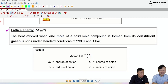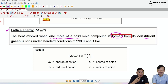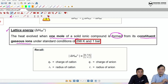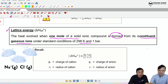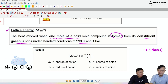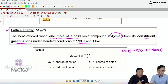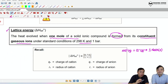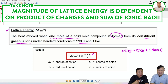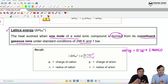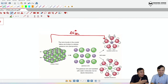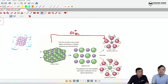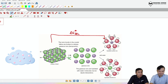The first step relates to lattice energy. The definition: the heat evolved when one mole of an ionic solid is formed from its constituent gaseous ions under standard conditions. For NaCl, the equation is: Na⁺(g) + Cl⁻(g) → NaCl(s). The magnitude of lattice energy depends on the product of charges and is inversely related to the sum of ionic radii. Since dissolution is the reverse process — breaking up the ionic solid — this step corresponds to negative lattice energy.